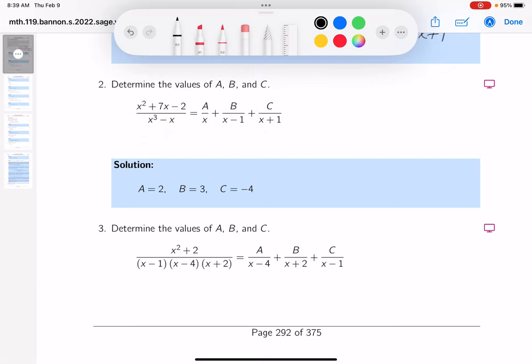Okay, so again, the strategy is the same, and what you're going to do is the LCD. I'm going to write that down for you. The LCD is x cubed minus x, and if you factor that, let's go through that.